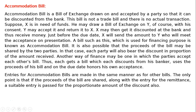An Accommodation Bill is a bill of exchange drawn on and accepted by a party, so that it can be discounted from the bank. This bill is not a trade bill and there is no actual transaction.